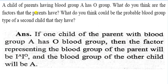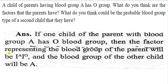Next question: A child of parents having blood group A and O — what factors do the parents have, and what could be the probable blood group of a second child? If one child of parents with blood group A has O blood group, then the factors representing the blood group of the parents will be I-A and I-O, and the blood group of the other child will be A.